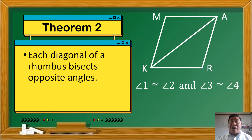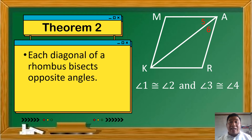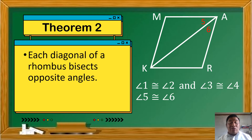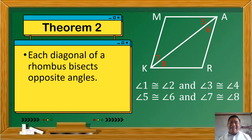Dito naman tayo kay diagonal AK — sino naman yung mga angles na nabisect niya? Angle A at si angle K. Dun muna tayo tumingin kay angle A — nung nabisect siya, nakabuo tayo ng dalawang maliit na angles: angle 5 and angle 6. Dahil nga siya ay nabisect, congruent ang measurement niyan — angle 5 is congruent to angle 6. Then, dun naman tayo kay angle K — nung nabisect, nakabuo din ng angle 7 and angle 8, na congruent to each other. Therefore, angle 7 is congruent to angle 8.